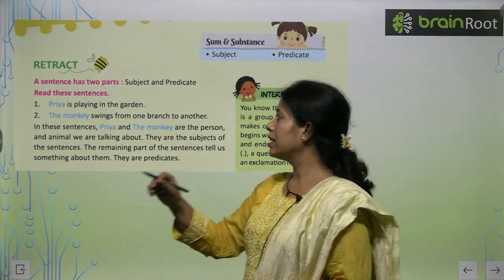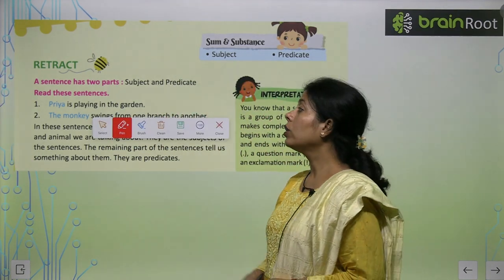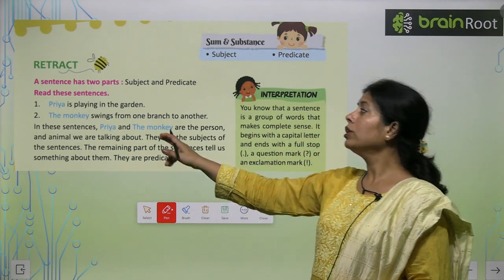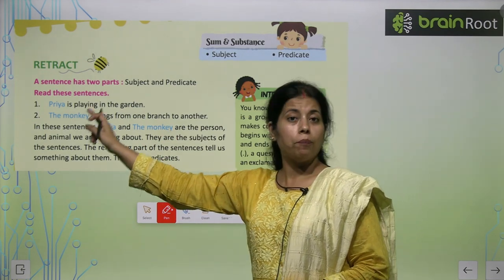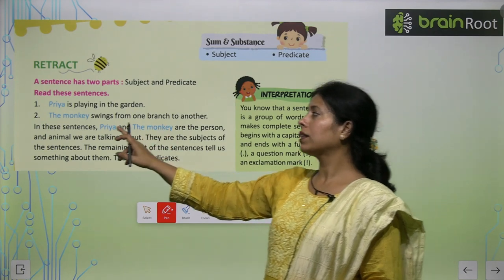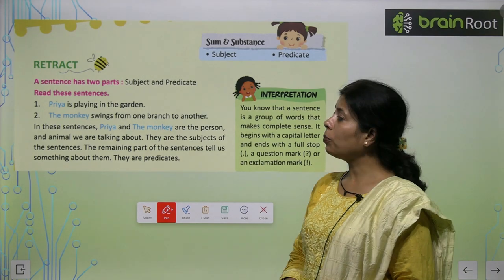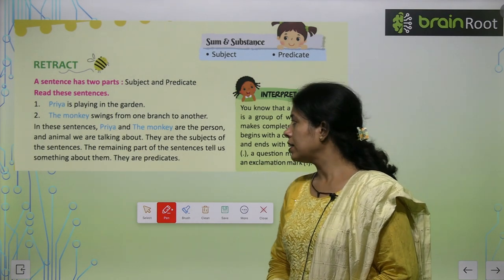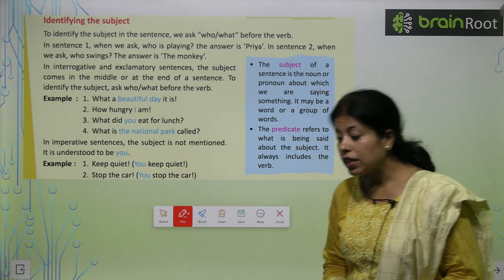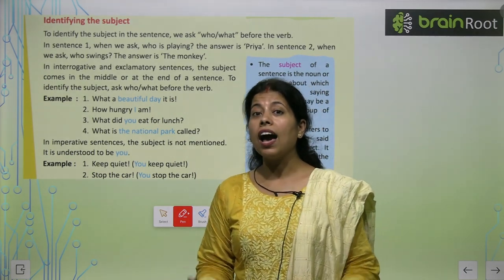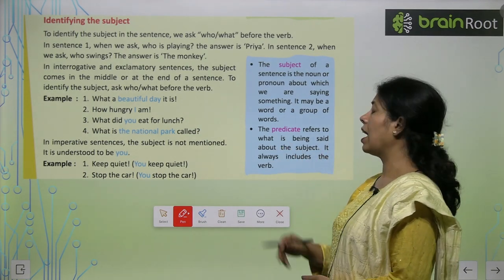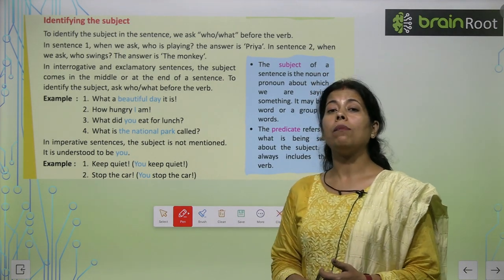Example: Priya is playing in the garden. To kis ke baare mein baat ho rahi hai friends? Priya ke baare mein baat ho rahi hai. Or kya baat ho rahi hai? Playing in the garden. So Priya is our subject and playing in the garden is predicate. The subject of the sentence is the noun or pronoun about which we are saying something — jiske baare mein hum baat kar rahe hai — woh humara subject hai. It will be a noun or a pronoun. The predicate refers to what is being said about the subject — joh baat hum kar rahe hai — woh humara predicate kehlaayega.